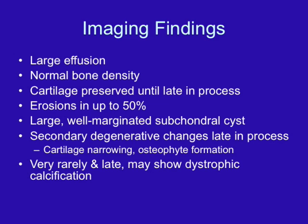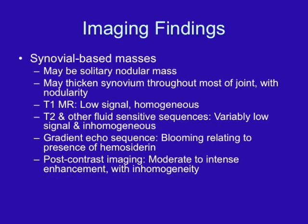Our patient presented quite late with chronic symptoms and significant secondary arthritic changes. The synovial-based masses may be solitary and nodular or may diffusely thicken the synovium. On T1, signal is typically low and homogeneous. On T2-weighted MRI, signal is oftentimes low but can be inhomogeneous depending on whether edema or hemorrhage is present. On gradient echo sequences, there is a blooming artifact related to hemosiderin within the multinucleated giant cells. There is variable enhancement on post-contrast imaging.